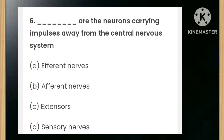Blank are the neurons carrying impulses away from the central nervous system. The options are: efferent nerves, afferent nerves, extensors, or sensory nerves. The answer is efferent nerves.